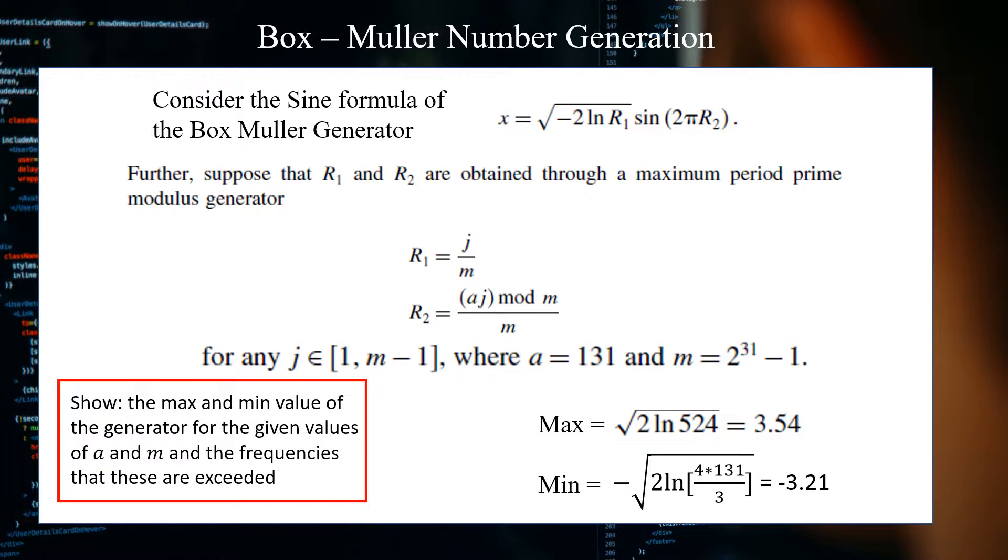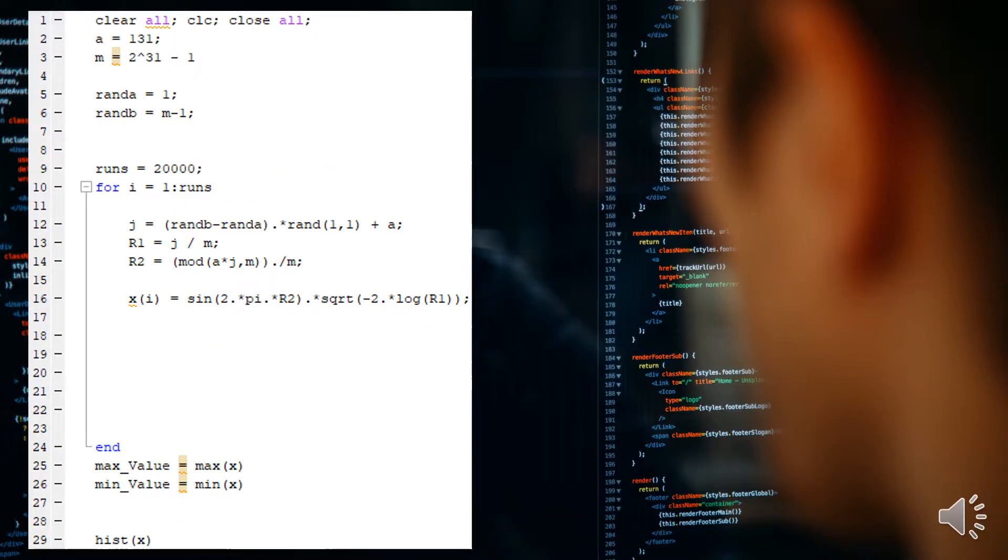Looking at the MATLAB code here, we initialize our variables at the top, then we set our parameters for which J will be created under, so rand between 1 and M minus 1. We also set our variables for R1 and R2, and those are going to be used within the sine function of the Box-Muller number generator.